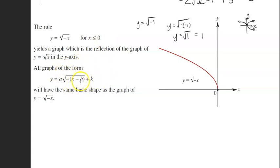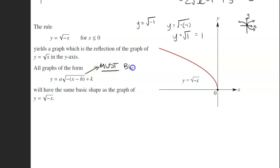The numbers you can put in are zero and the negatives, because when you substitute a negative number in, it cancels out with the negative inside to give a positive. So negative numbers only work here, which is why there is a reflection on the y-axis — you can only plug in negative x values. Your corresponding y values will still be positive. This is why all graphs of this type take on the reflected form, and you must make sure the equation is in the correct format.